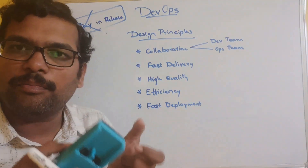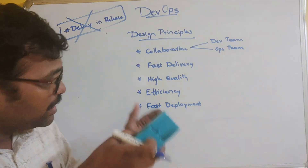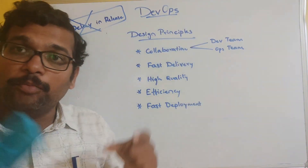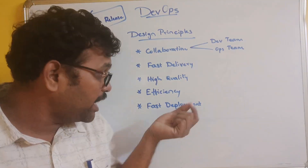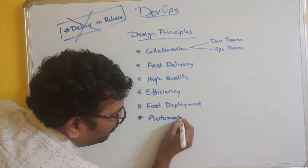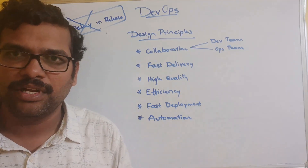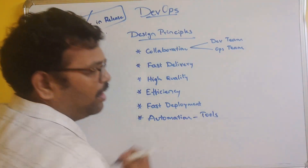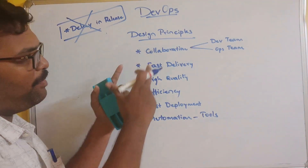Another design principle is fast deployment. When the development team works separately from the operations team, deployment takes much more time. In DevOps, with both teams working together, deployment becomes very fast and easy. Finally, automation — for every phase, different tools are used. There are many tools in DevOps, and the complete process is done with the help of those tools.